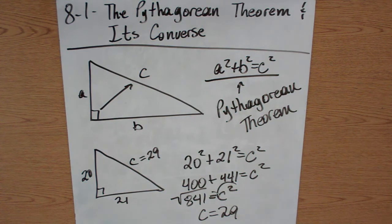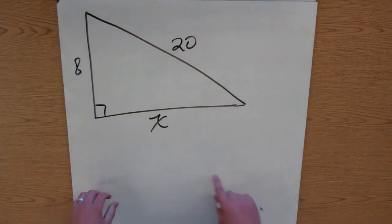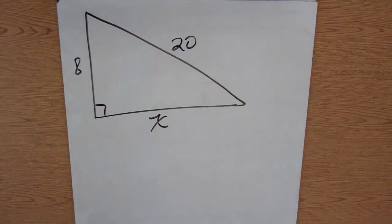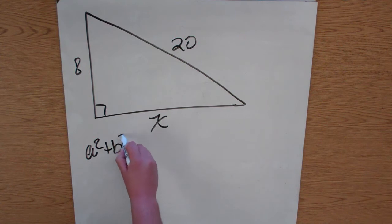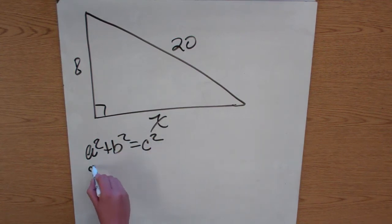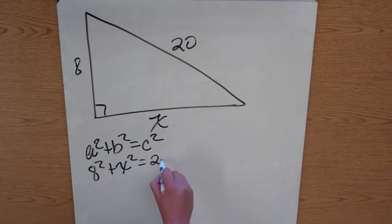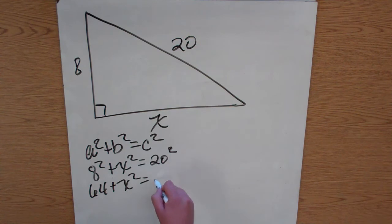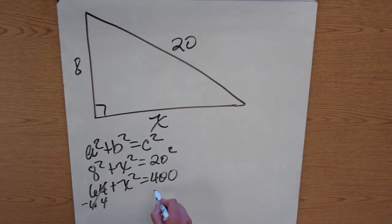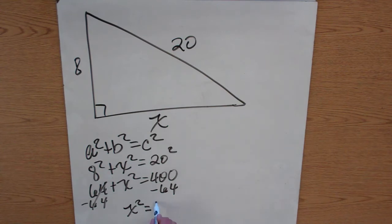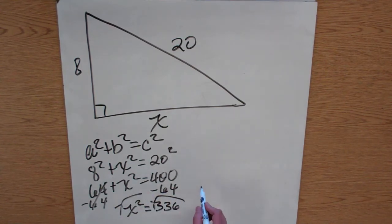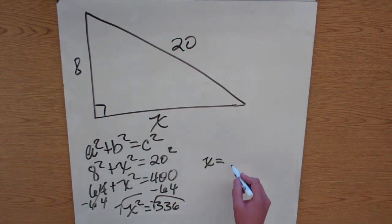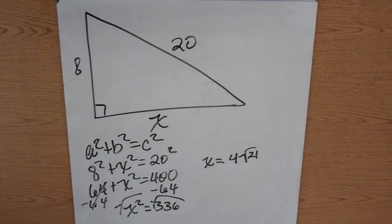What happens if you don't have one of the sides? We have one side, the hypotenuse, and we're missing the other side. We're still going to use the Pythagorean Theorem: a squared plus b squared equals c squared. So 8 squared plus x squared equals 20 squared. 8 times 8 is 64, plus x squared equals 400. Subtract 64 from both sides: x squared equals 336. Take the square root of both sides, so x equals 4 times the square root of 21, which is the simplest radical form of the square root of 336.